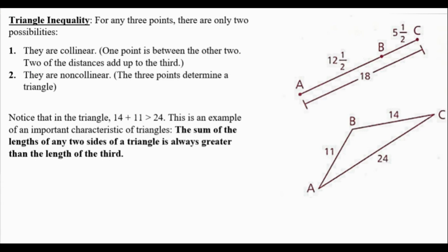Option two is that the points are non-collinear and the three points determine a triangle. In the triangle to the right I have lengths of 14, 11, and 24. When I add 14 and 11, that's bigger than 24. The sum of the lengths of any two sides of a triangle is always greater than the length of the third. So if I have side lengths A and B, when I add those together it has to be bigger than my third side C. If it is not, then I do not have a triangle.